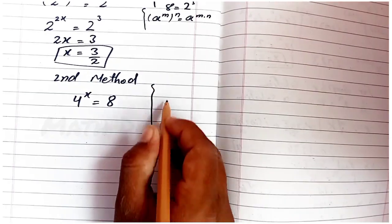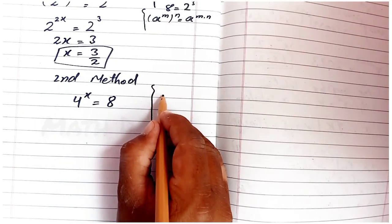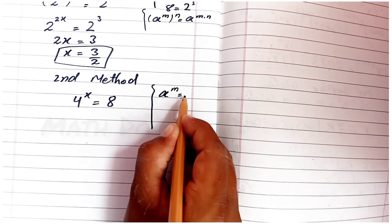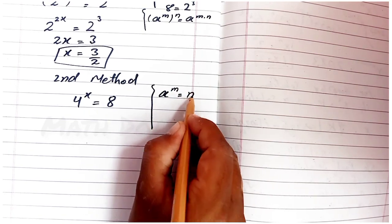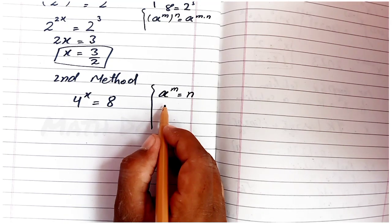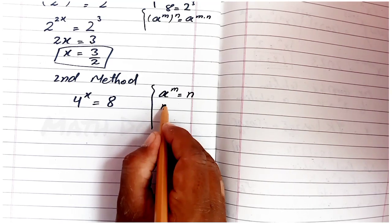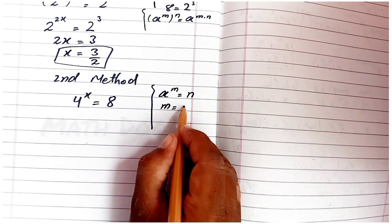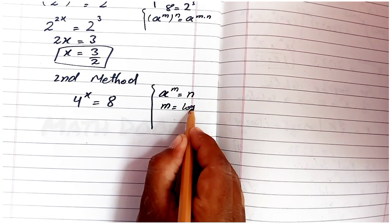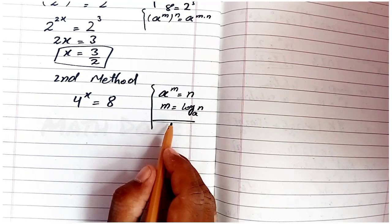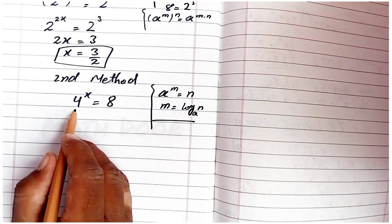We have a logarithmic rule: if a^m = n, then m = log base a of n. We apply this logarithmic rule here.